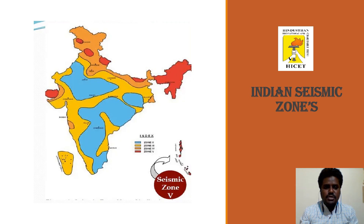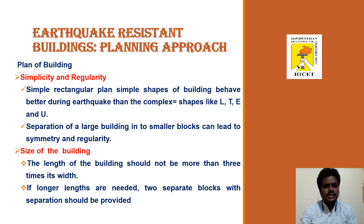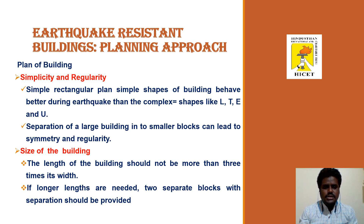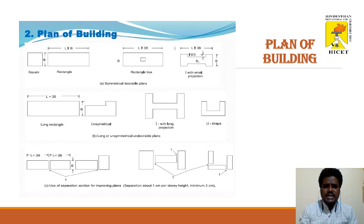For the planning approach in earthquake-resistant buildings, at the planning stage we consider simplicity and regularity of shape. A simple rectangular plan provides better earthquake resistance, while complex shapes like L, T, and U are less desirable. Separating large buildings into smaller blocks can lead to symmetry and regularity. The length of the building should not be more than three times the width; if a longer length is needed, two separate blocks should be provided.